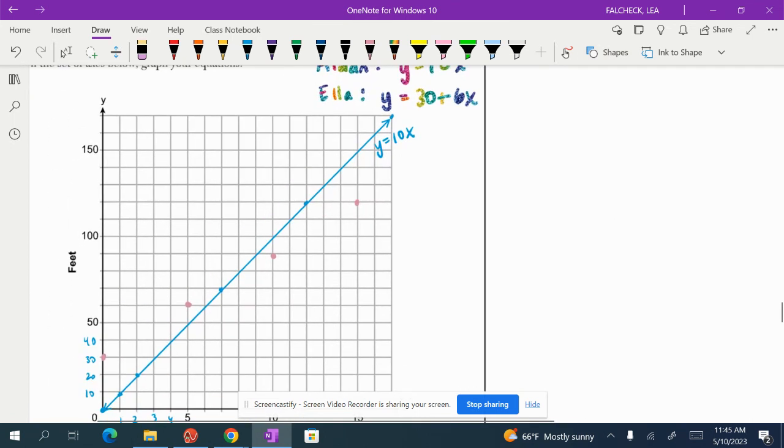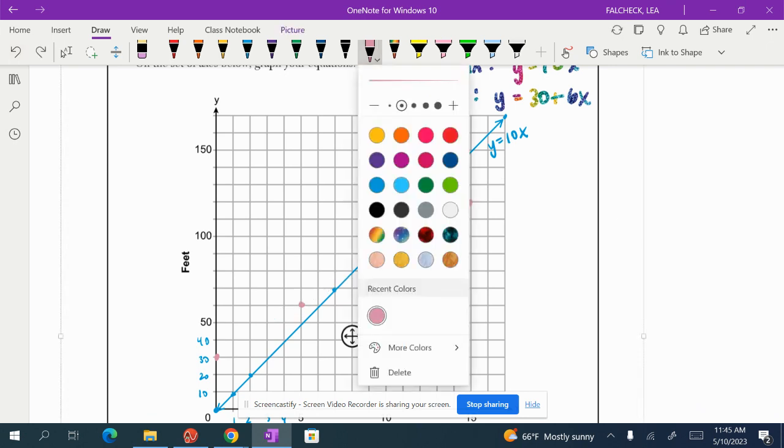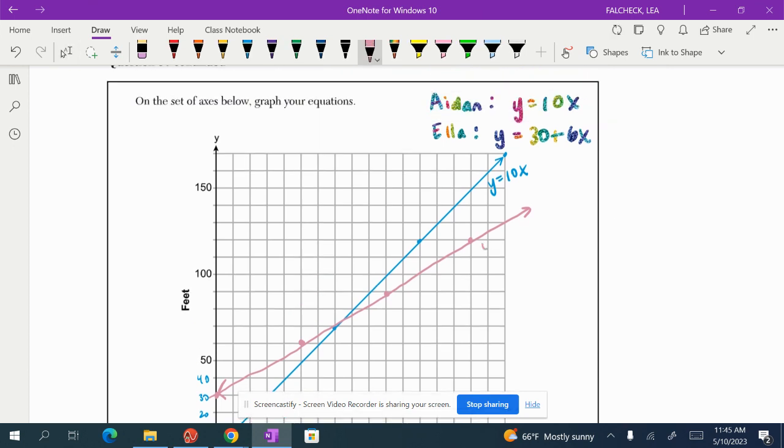Oh, no. Why does it do that? I hate when it does that. This is why I don't use the line feature. It's like annoying. Okay. See, it's like not where I wanted it to be. Maybe I should do it by hand. Okay. You should always use a ruler, but since I'm doing it on the computer, it's kind of annoying. Okay. Cool. So then now let's label this as y equals 30 plus 6x.